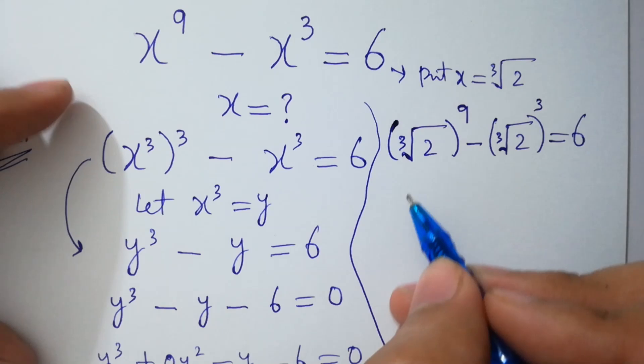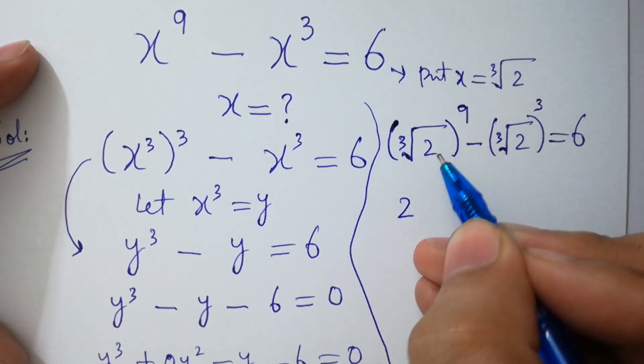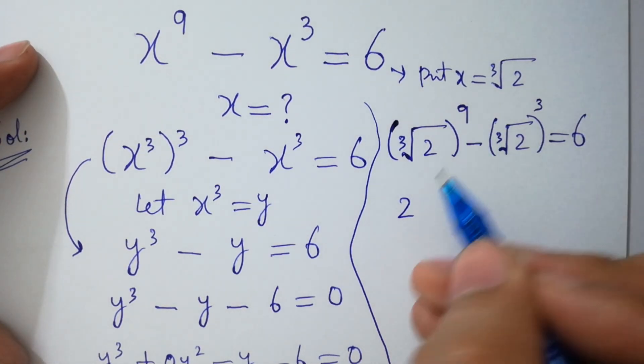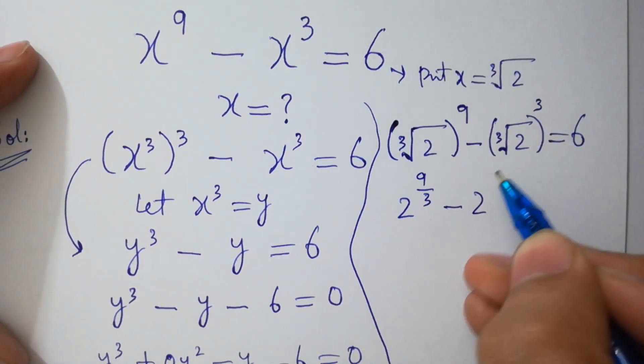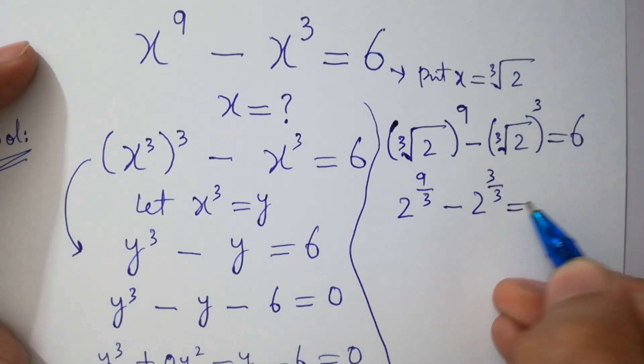Here, this is same as 2 to the power 9 over 3, minus 2 to the power 3, 3 over 3, equal to 6.